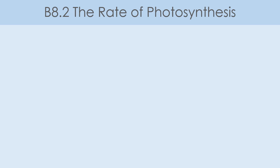We're now going to look at some of the limiting factors of photosynthesis. These are things that will speed up or slow down the rate of photosynthesis — they will limit it, meaning photosynthesis can't increase past a certain amount.